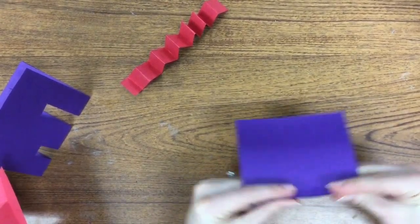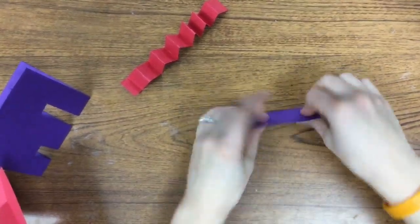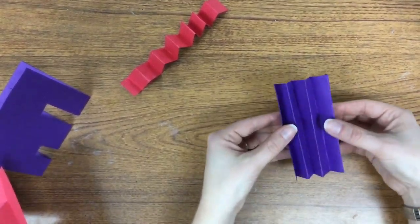The next one is using a bigger piece of paper. So this will make a larger, kind of fatter accordion. Same thing: over, under, over, under until you get to the end.